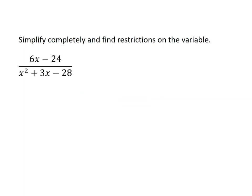For the next example, we begin by factoring out whatever we can. On top, both numbers are multiples of 6, so I factor out a 6 and I'm left with x minus 4. On the bottom I actually need to factor the trinomial. Since a equals 1, I'm looking for two factors of negative 28 that add to positive 3 — those are positive 7 and negative 4. Multiplied they equal negative 28, and added they give the middle term of positive 3.